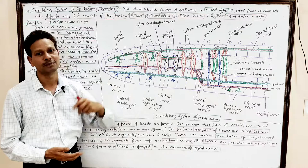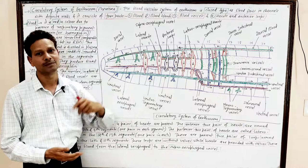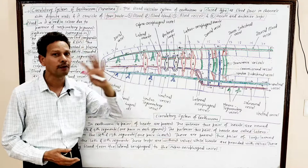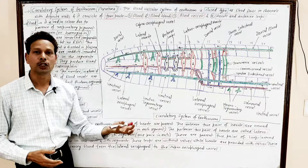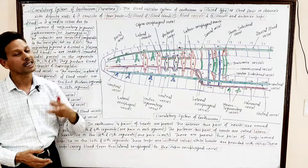Blood remains in confined blood vessels having definite walls. In this system there are no body cavities, no sinuses — blood remains in closed blood vessels. So it is a closed blood vascular system.